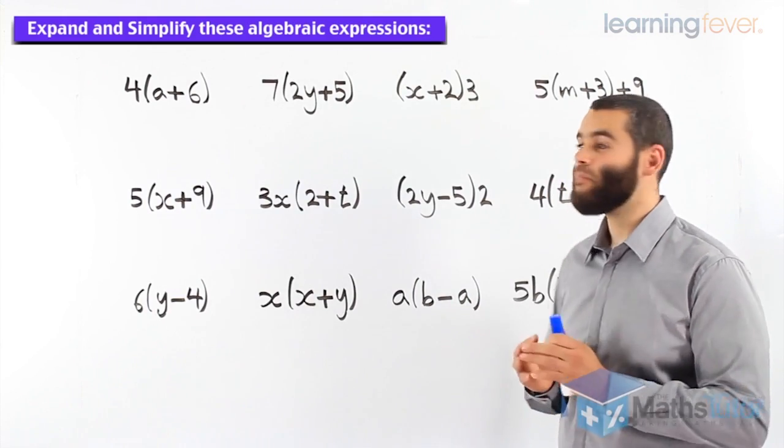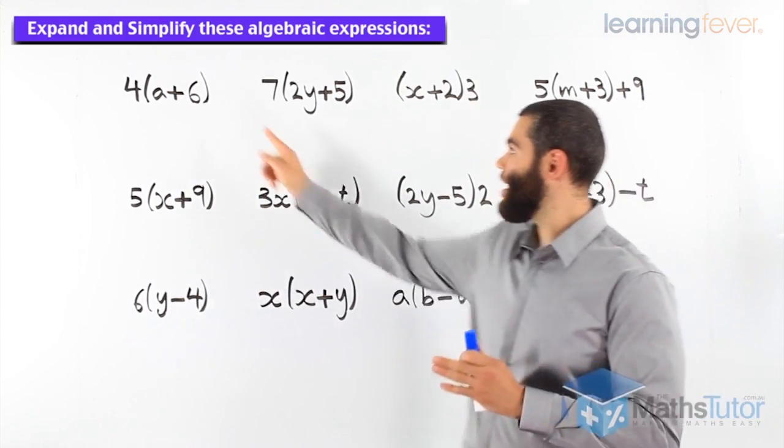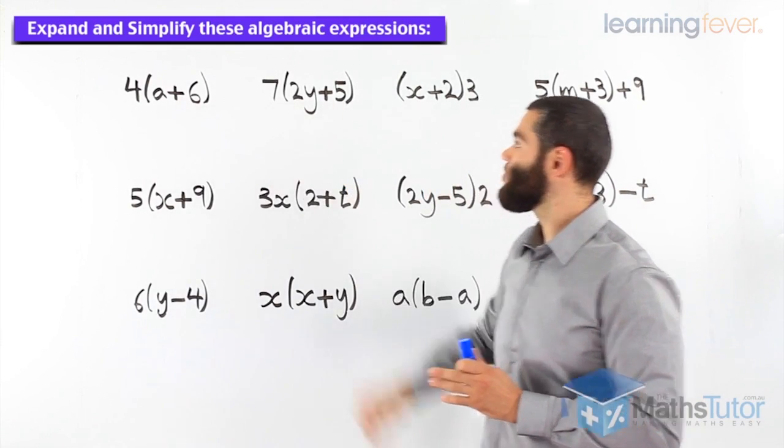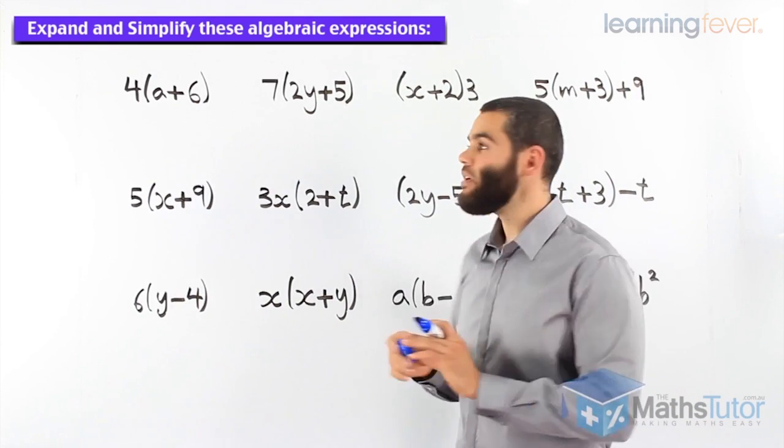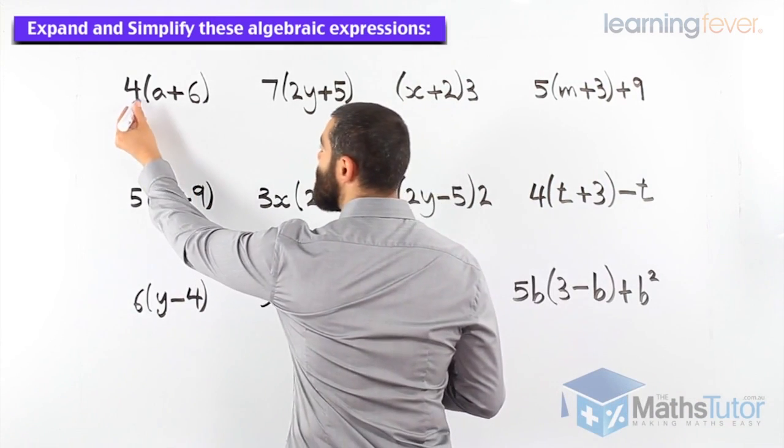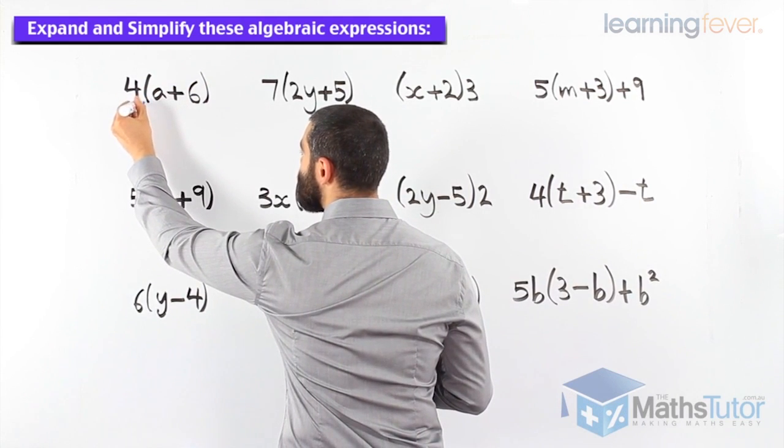These examples were asked to expand to remove grouping symbols. The grouping symbols are the brackets, as you can see. We're going to start, and we've learnt that in algebra, between the four and the numeral and the brackets, there is a little multiplication.